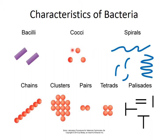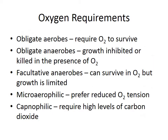Here are some different bacterial shapes. The most common are bacilli, which are rod-shaped, and cocci, the little round ones. Then we have spirals or spirochetes. Especially with cocci bacteria like strep and staph, they come in specific groupings — chains, clusters that look like grapes, pairs, tetrads, and palisades. Seeing those specific arrangements can actually help you identify the species.